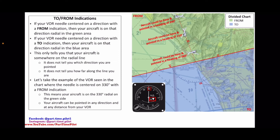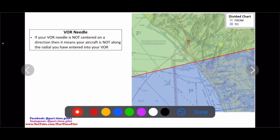Using the example where the needle is centered on 330 with a FROM indication: our aircraft is on the 330 degree radial on the green side because we're on the FROM side — meaning we're on the same side as our radial. Your aircraft can be pointed in any direction and at any distance from the VOR. So that explains the TO/FROM indication. Now, what about the VOR needle? If your VOR needle is not centered, it means your aircraft is not along the radial you have entered.